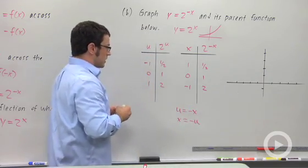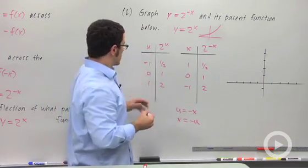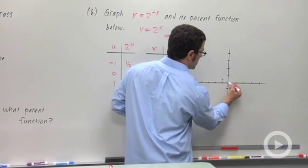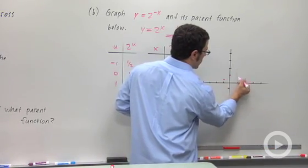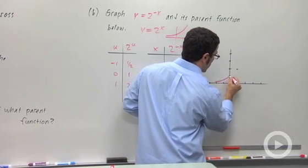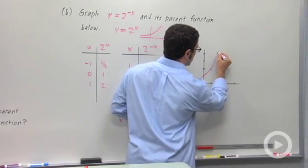And so I'm going to plot these two functions. First, 2 to the x. Negative 1, 1 half. 0, 1, and 1, 2. And I've got my recognizable 2 to the x graph that looks like this.